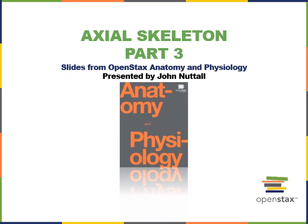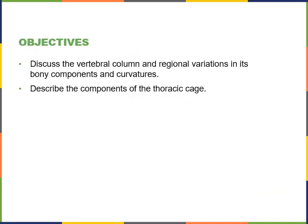This video will cover part three of the axial skeleton. As we go, we'll cover the following study objectives: discuss the vertebral column and regional variation in its bony components and curvatures, and describe the components of the thoracic cage.